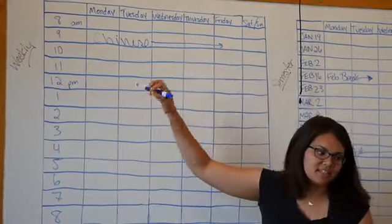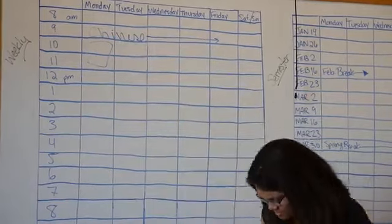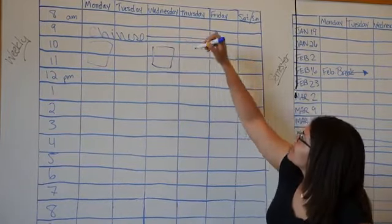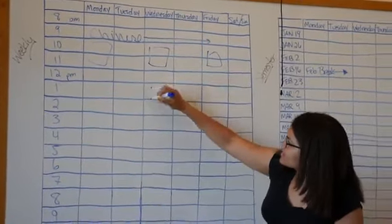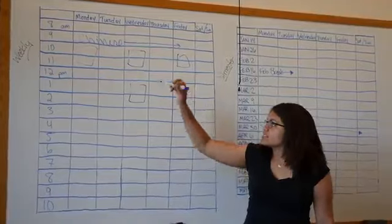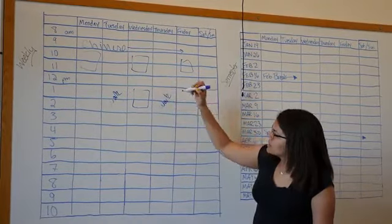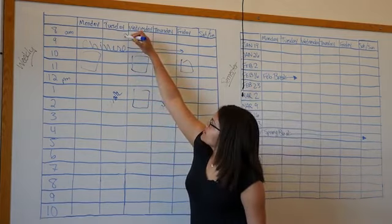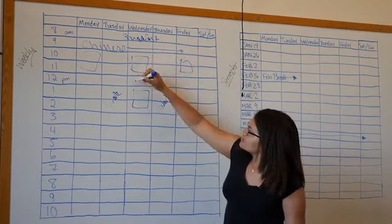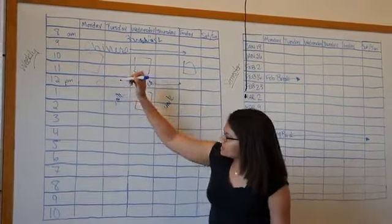So you write your classes in here. You might have some around here. Oops. Okay. So you might have some in here, down here. So yeah. So you write in the things that you have every day. Okay, so class, work, and breakfast, and lunch maybe, and dinner.